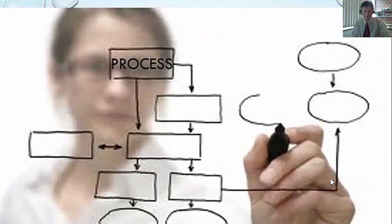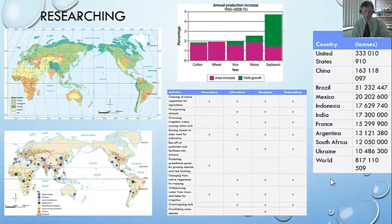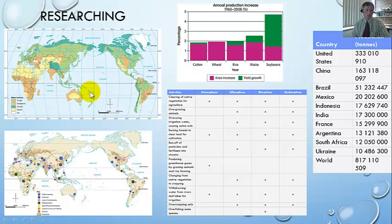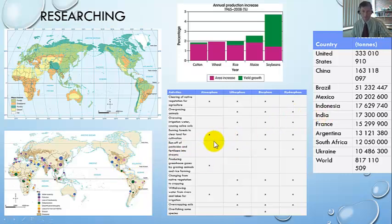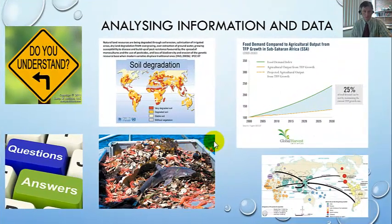Now here is the process. The first part is to engage in a whole range of research. I want you to look at maps, tables, diagrams, and so forth. It's important that in geography we look at a lot of graphs, tables, and diagrams. Once you have collected some of that, it's time to analyse and categorise that information.